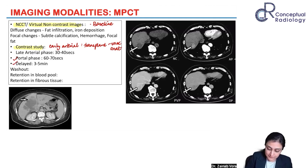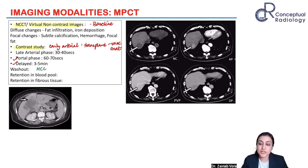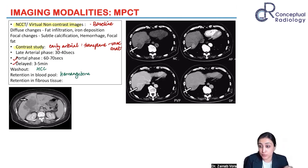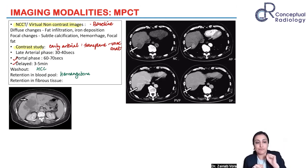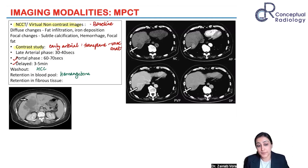In the portal venous and delayed phase, three things to look for: First, if it shows washout, we think HCC. Second, if contrast is retained equal to the blood pool, think hemangioma — remember: retention equal to blood pool. Third, if the mass retains contrast but it's in central fibrous tissue and not equal to the blood pool, think FNH — the central scar accumulates contrast in the later phase.